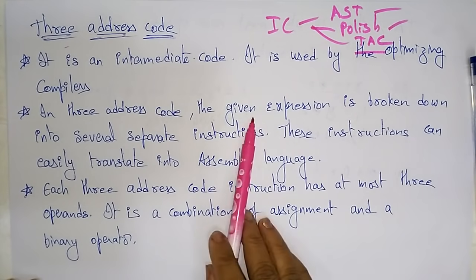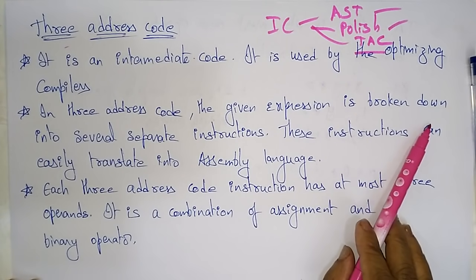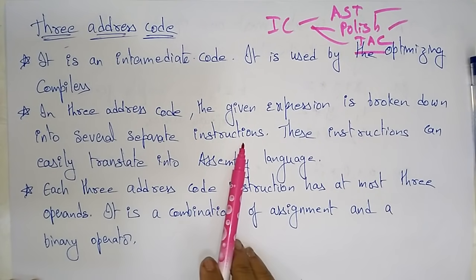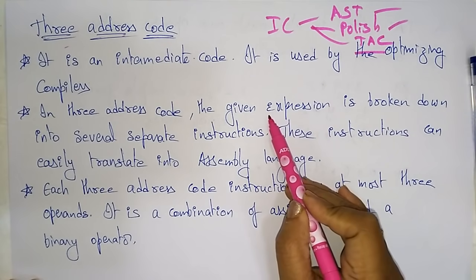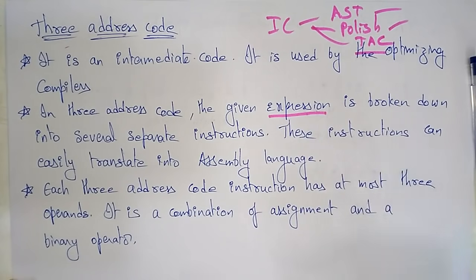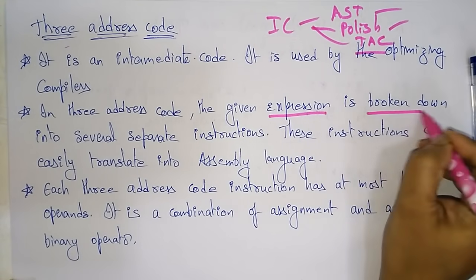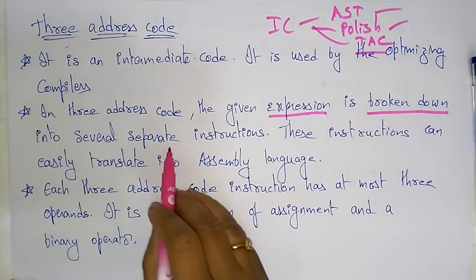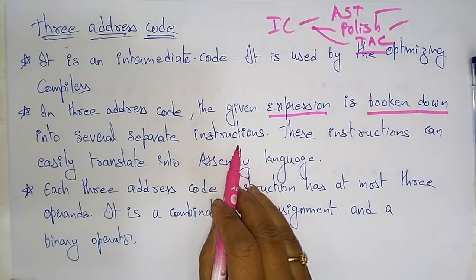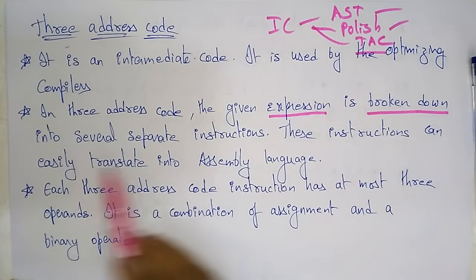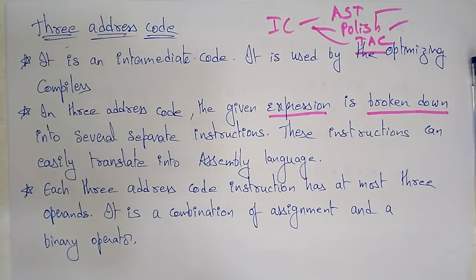In three address code, the given expression is broken down into several separate instructions. Whatever expression is given, it is divided into several separate instructions. These instructions can easily be translated into assembly language. So why are we breaking the expression into several separate instructions? Because once broken down, it can easily translate to assembly language.